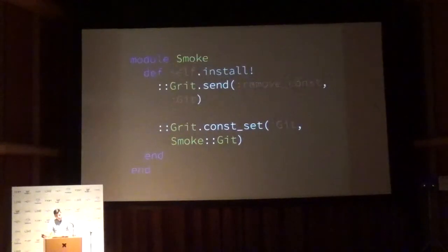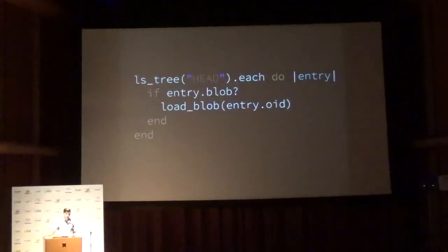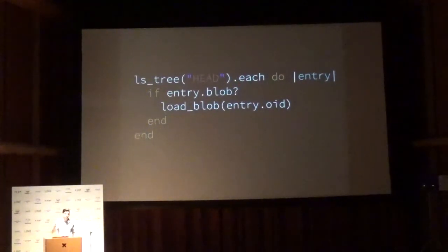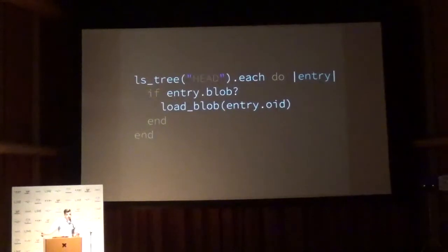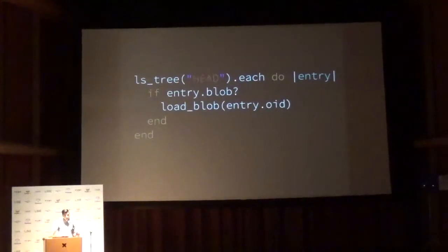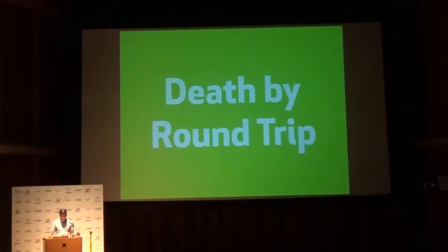But there are some problems. LSTree is how you look up all the files in a directory, and LoadBlob is how you load that file off disk. We make one Grit call to load the tree, and then for each file in that tree, we make another Grit call to load the blob. In the old Grit scenario this worked fine — file system access is relatively fast. But as we moved to the new system with Smoke, now we're making actual TCP connections to a back-end file server for each blob in the tree. We call this death by round trip.